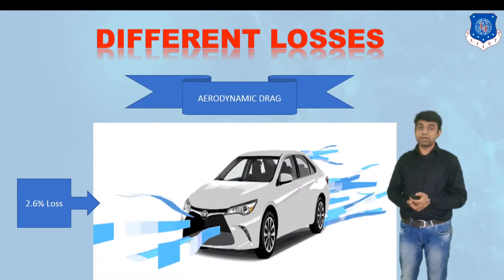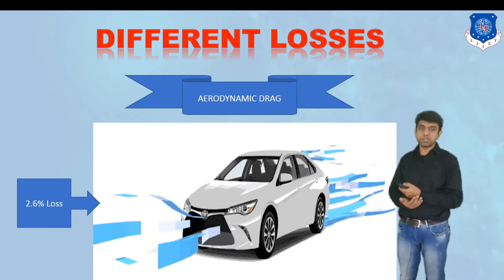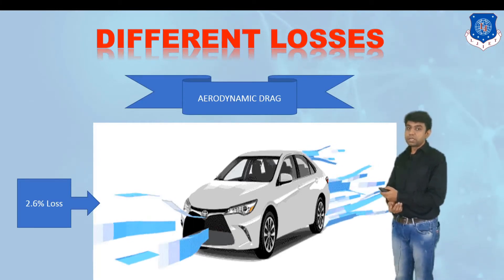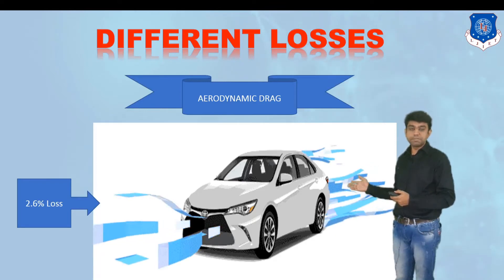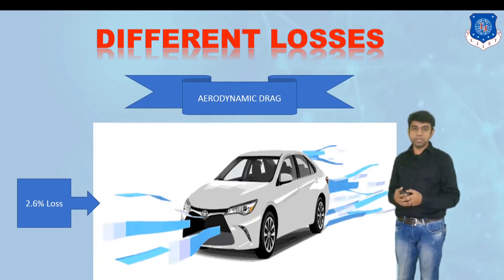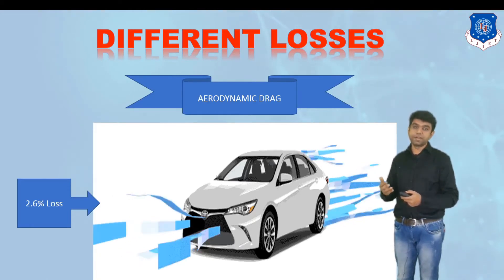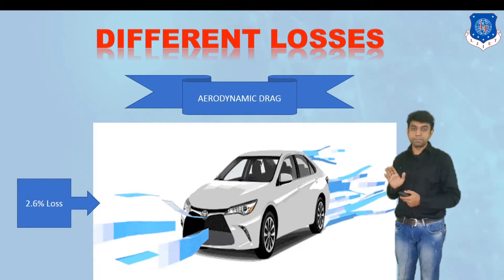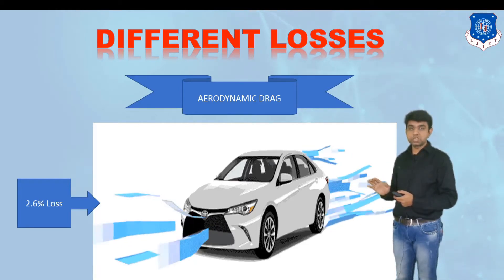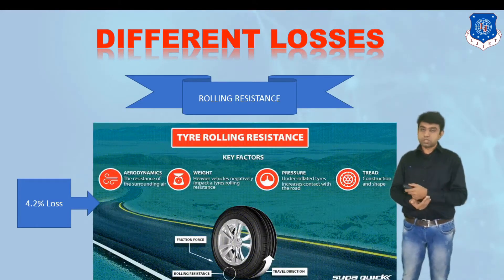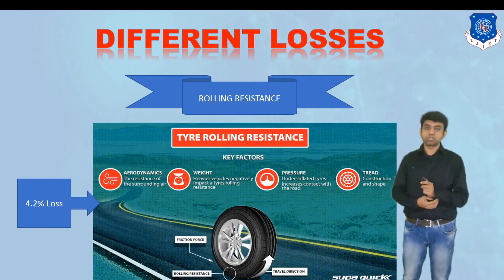Next is aerodynamic drag. The wind force striking on the vehicle accounts for about 2.6% of loss, which is totally dependent on the outer profile of the vehicle. You may have heard about the Fluid Verna — its profile allows wind to flow like a fluid, passing easily over the surface instead of creating drag. With good vehicle design, this 2.6% can be reduced significantly. These percentage figures are average values across most vehicles.